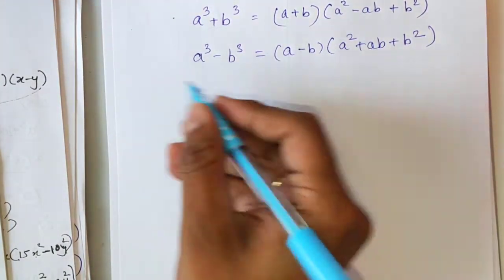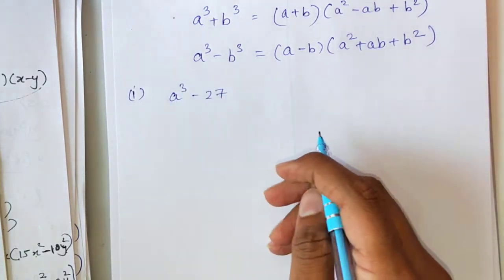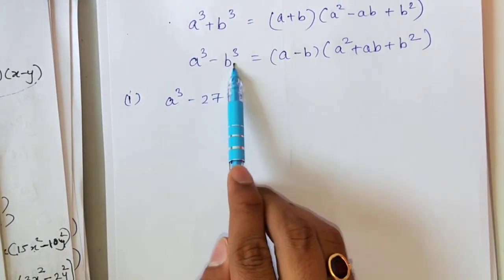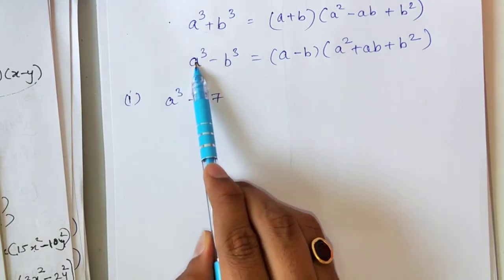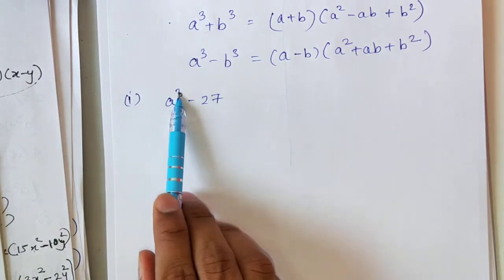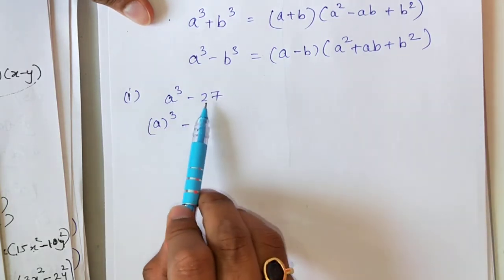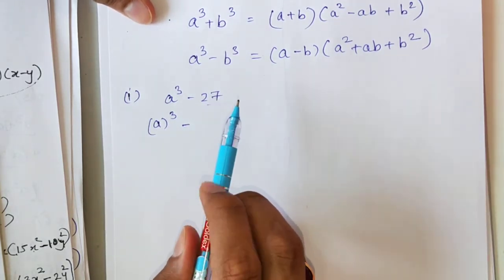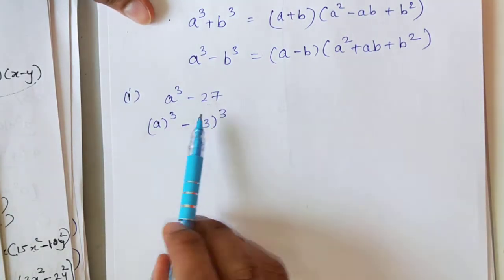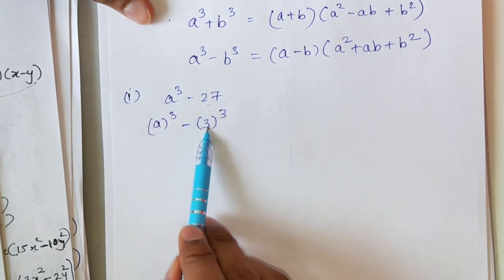Let's see the first sum. The question is a³ - 27. First we have to bring the question into the standard form where you have one cube and a second cube. Here I have one cube, a³. I will write this as (a)³. This 27 is 3³, so I will write 27 as 3³. Now I have (a)³ - (3)³, that means I have a³ - b³.